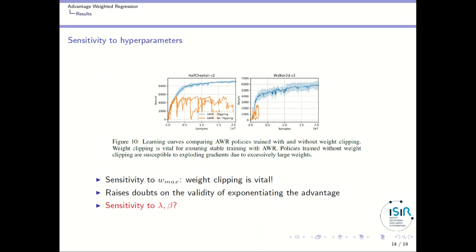They study the sensitivity to some hyperparameters, but not all. In particular, they show that using clipping on the weights is absolutely crucial to get good results: with clipping you get strong results, and without clipping results are much worse. This is interesting because using clipping means you don't follow exactly the exponentiated advantage term, which raises doubts on the validity of the exponentiation approach. They do not study sensitivity to the lambda of TD-lambda nor to the beta temperature parameter.